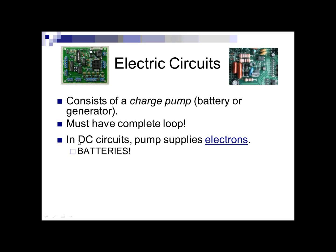DC, which stands for direct current, means that there is a pump of electrons. In a battery, there are two different chemicals — one chemical supplies electrons, the other one pulls the electrons. So the electrons flow from one side of the battery to the other. In a DC circuit, electrons are actually flowing in one direction. Direct means it has a direction to it.